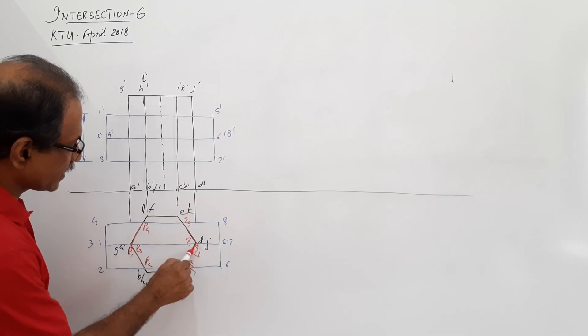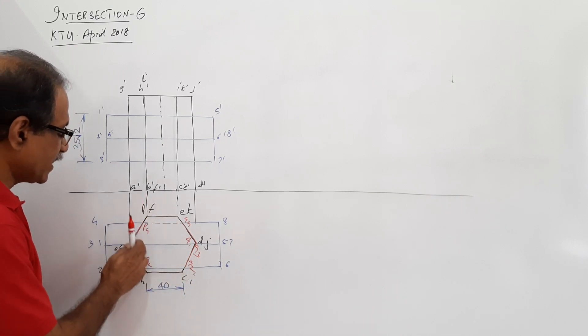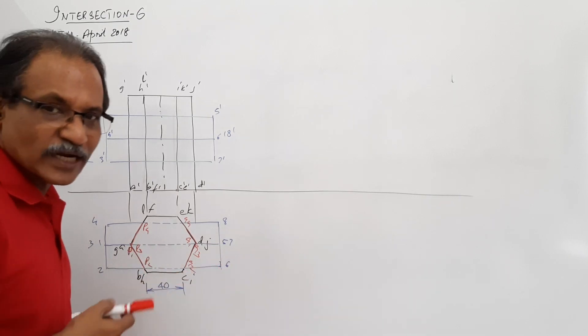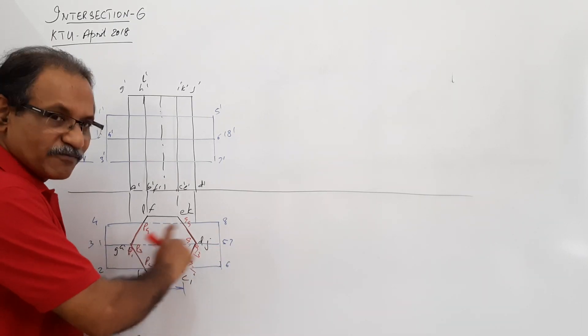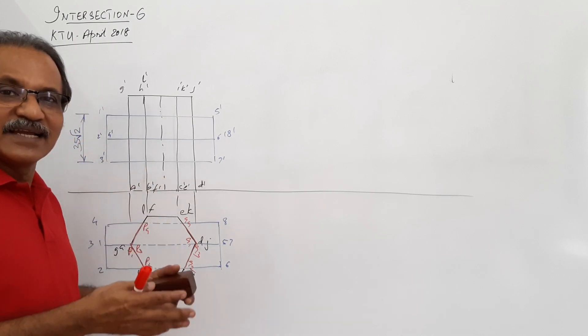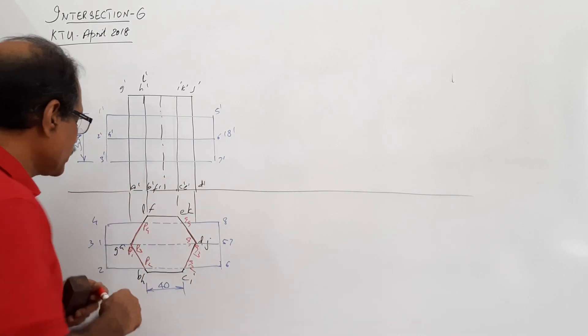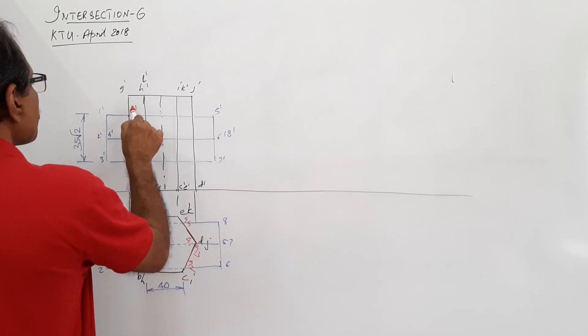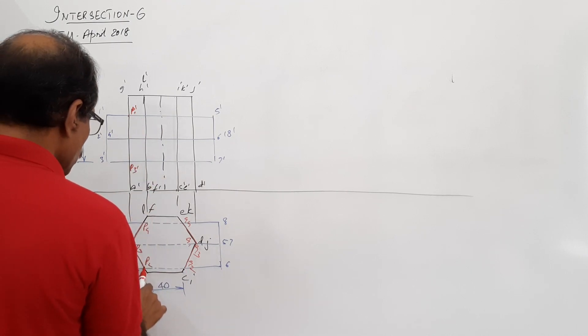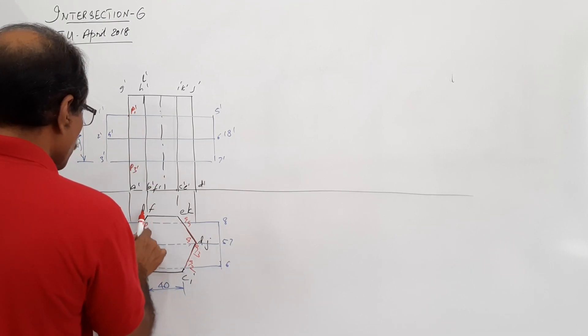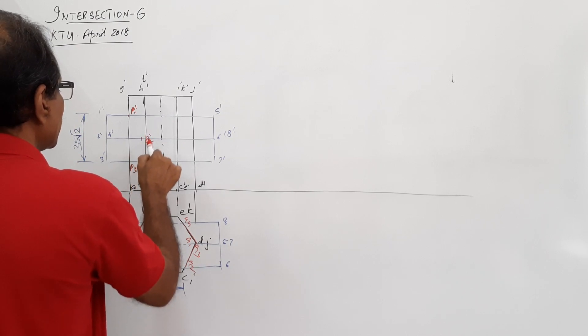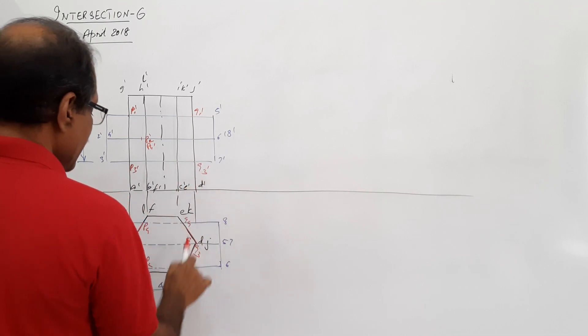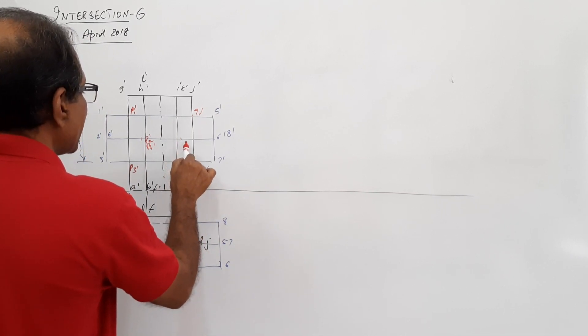These lines become dotted because they are not visible - inside the vertical prism. The horizontal edges of the square prism that are inside the vertical hexagonal prism are not visible, so they are dotted. When you come to the elevation, P1 will give you P1 dash, P3 gives P3 dash. The projector through P2 which passes through P4 gives P2 dash and P4 dash.